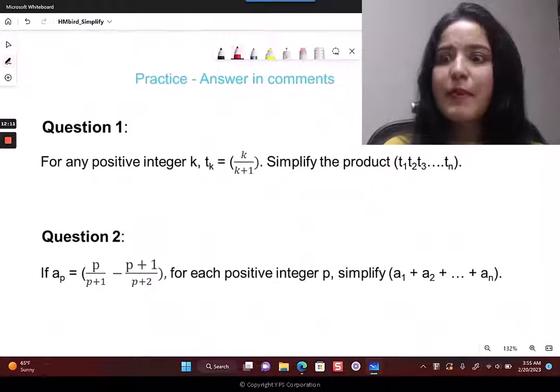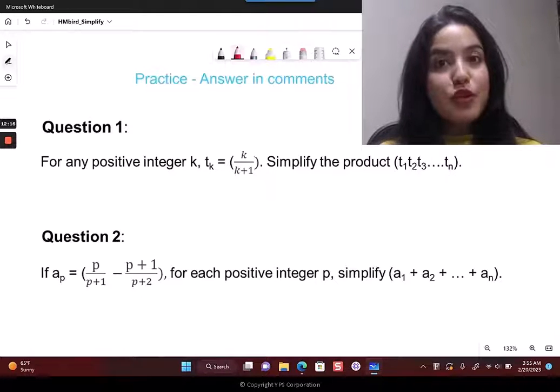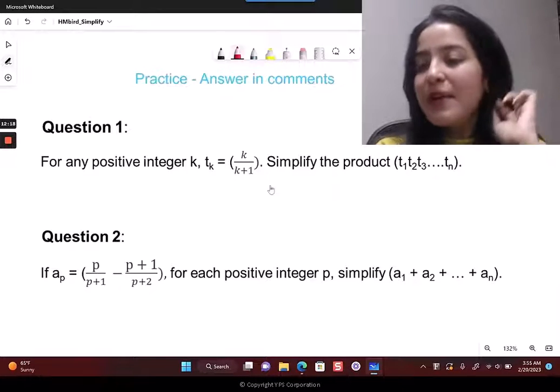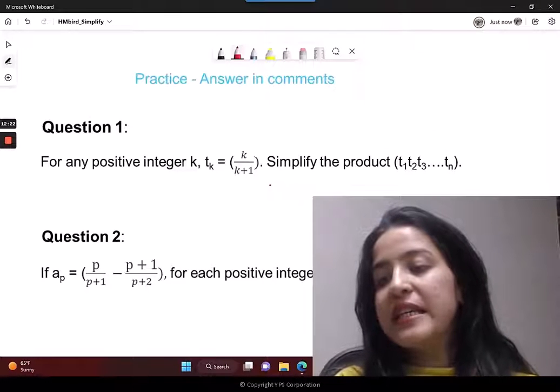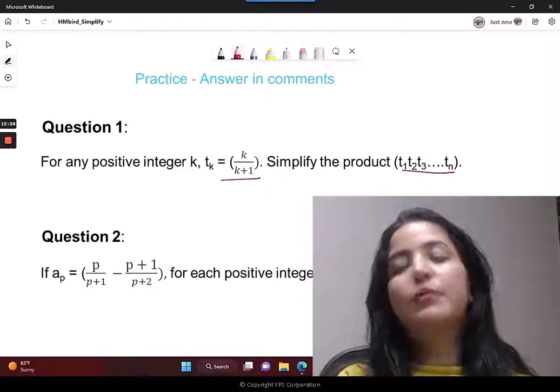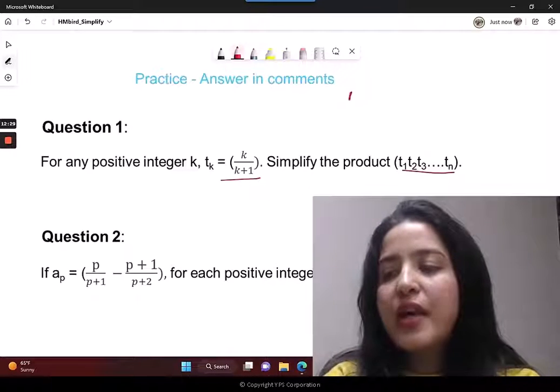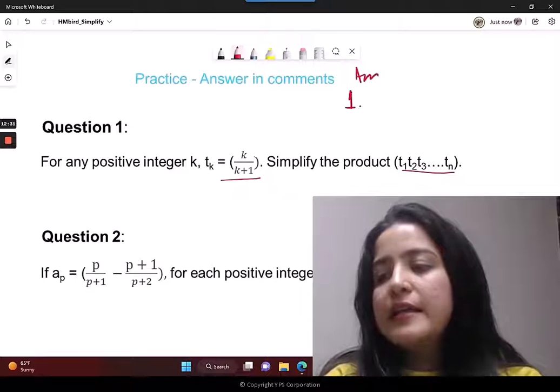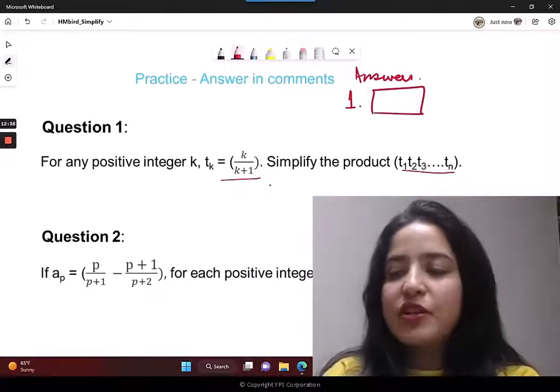Now remember the practice questions I told you about. These are the questions that you need to solve. For any positive integer k, tk is this thing. Simplify the product. All you're going to do is write down the final simplified version. So you'll write answers like this: one and whatever your simplified expression is, two and whatever your simplified expression is.